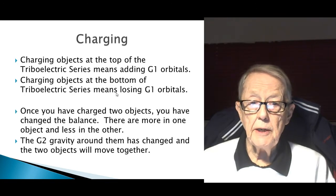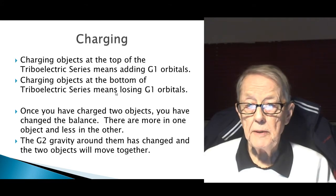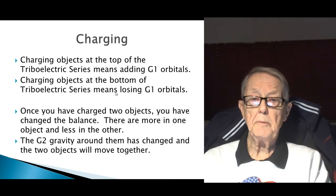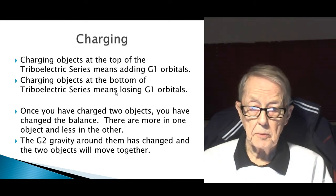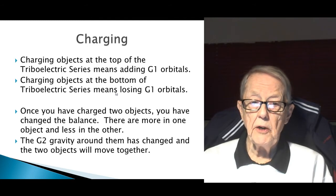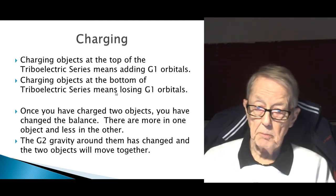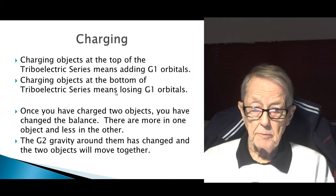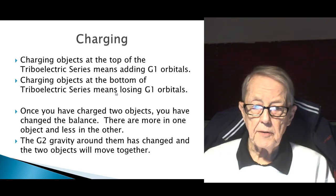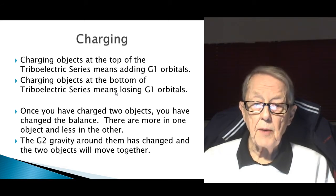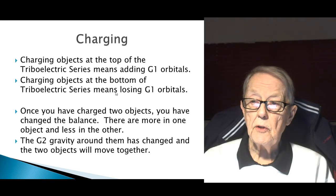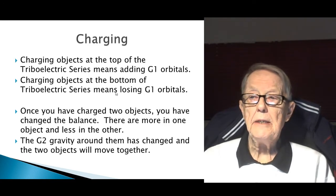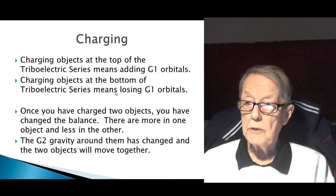Charging objects at the top of the triboelectric series means adding G1 orbitals; charging objects at the bottom means losing G1 orbitals. Once you have charged two objects, you've changed the balance between the balloon and the wall because there are more G1s in one object than the other. The G2 gravity around them has changed, and the two objects set up a field that will move them together, much like G1 gravity moves the moon towards the Earth.